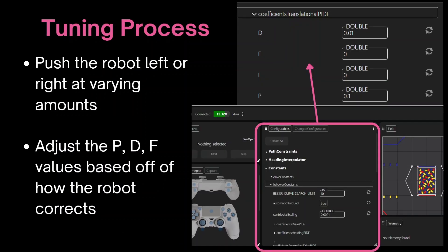Once we run the correct op mode we can push the robot left or right at varying amounts and observe how the robot corrects back to its starting location. Based on the robot's behavior we can start adjusting the P, D, and F values based off of how the robot corrects. You can see in panels that in the configurables tab you can navigate under constants and scroll down until you see the coefficients translational PIDF. Here you can modify each of the individual values.